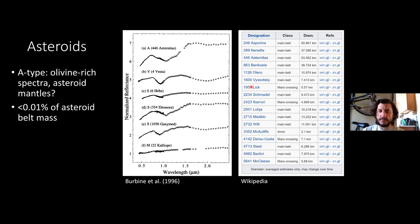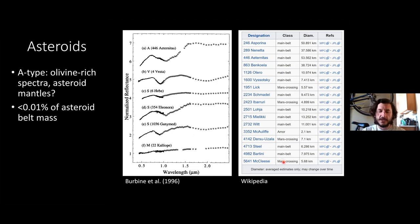Here is a list from Wikipedia of all A-type asteroids — there really aren't many of them. There seems to be this olivine shortage in the asteroid belt from remote observation, because there aren't nearly as many A-type asteroids as there should be if there was widespread differentiation among early planetesimals.